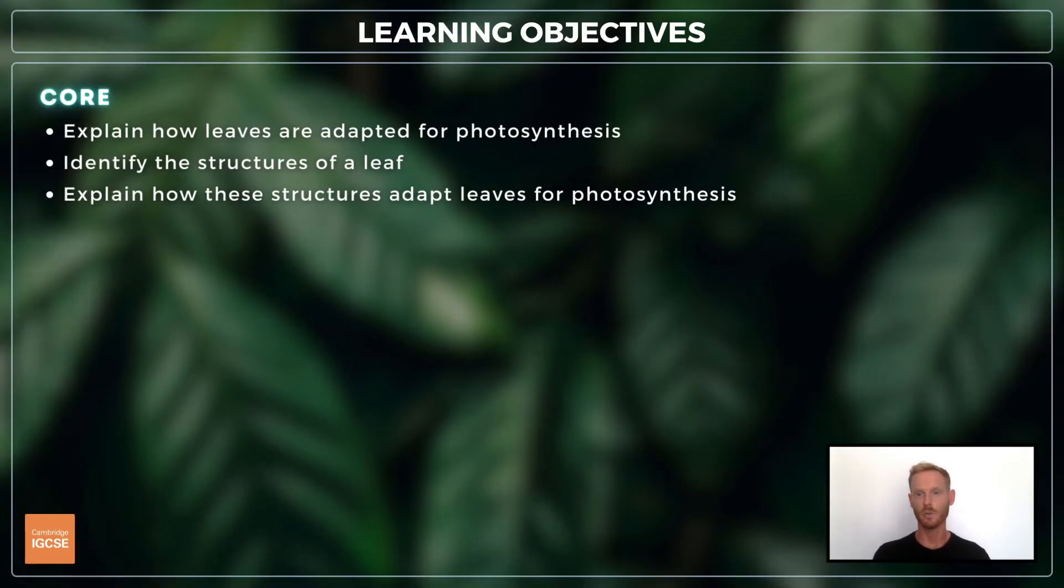For topic 6.2 you need to explain why leaves are thin and have a large surface area, identify the structures of a leaf and understand how these structures adapt leaves for photosynthesis. There's no extended supplement for this one.